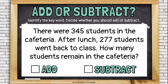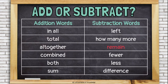Let's look at another. There were 345 students in the cafeteria. After lunch, 277 students went back to class. How many students remain in the cafeteria? Here we have the word 'remain.' Remain is a subtraction keyword. And if I think about what's happening in this problem, I have some students and some of them leave the cafeteria. I'm losing students — I'm taking away students. So it makes sense that I would need to subtract here. Remain is usually a subtraction word.